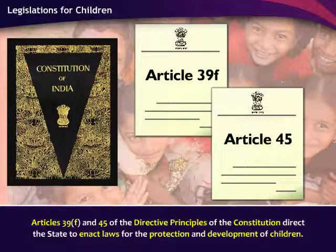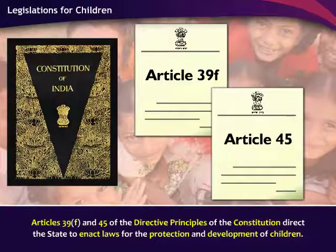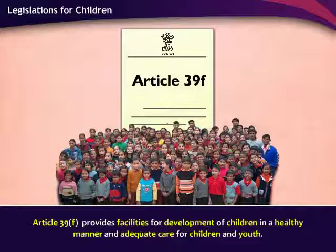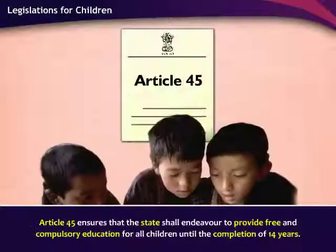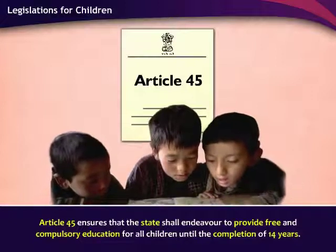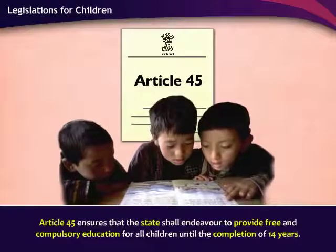Articles 39F and 45 of the Directive Principles of the Constitution direct the state to enact laws for the protection and development of children. Article 39F provides facilities for development of children in a healthy manner and adequate care for children and youth. Article 45 ensures that the state shall endeavor to provide free and compulsory education for all children until the completion of 14 years.